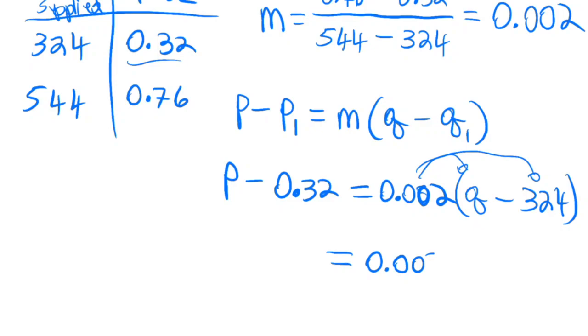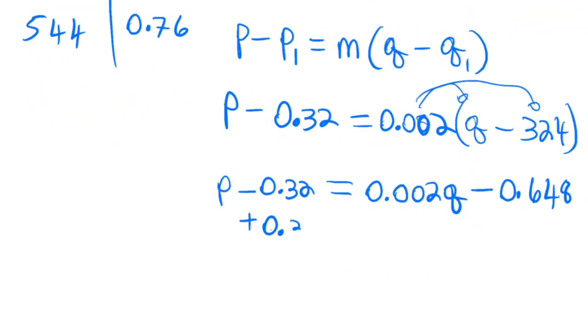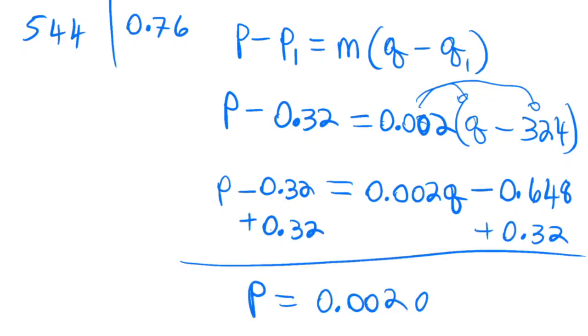Lastly, to get the equation, I add 0.32 to both sides and get P equals 0.002Q minus 0.328. This is the equation I'm looking for.